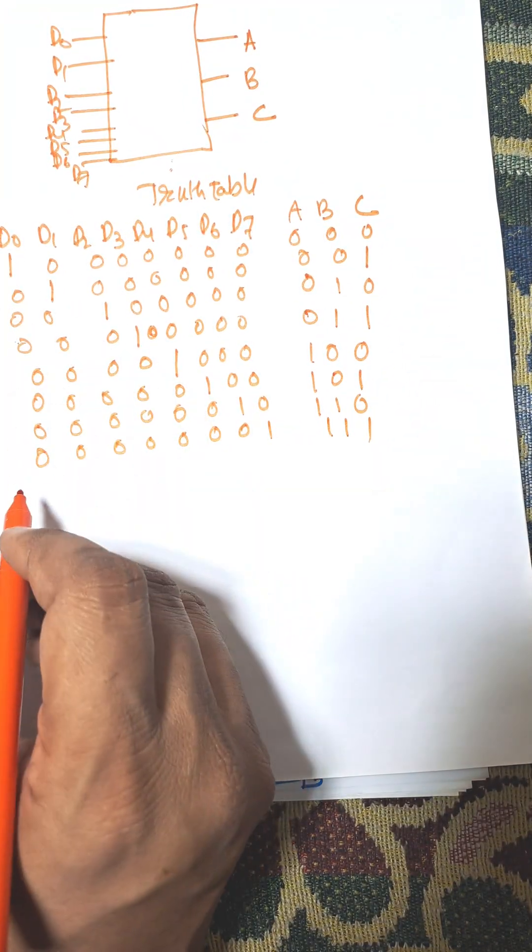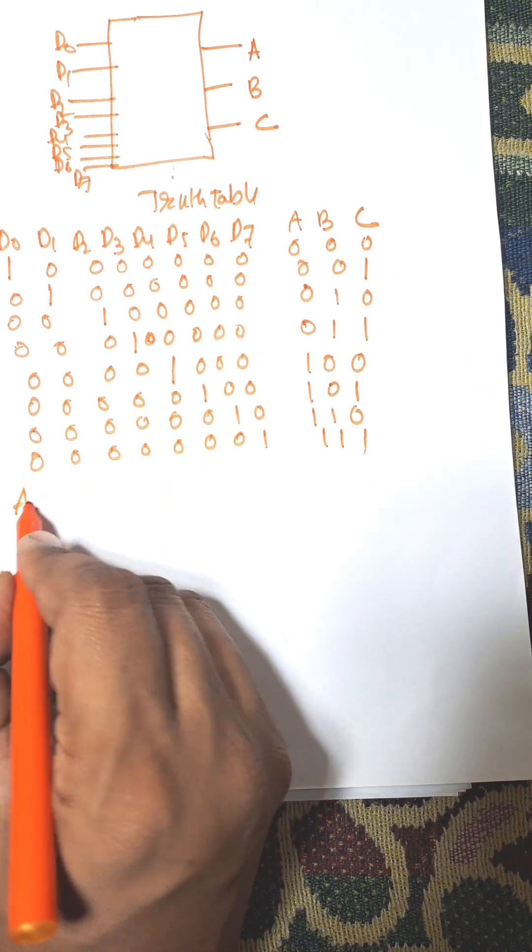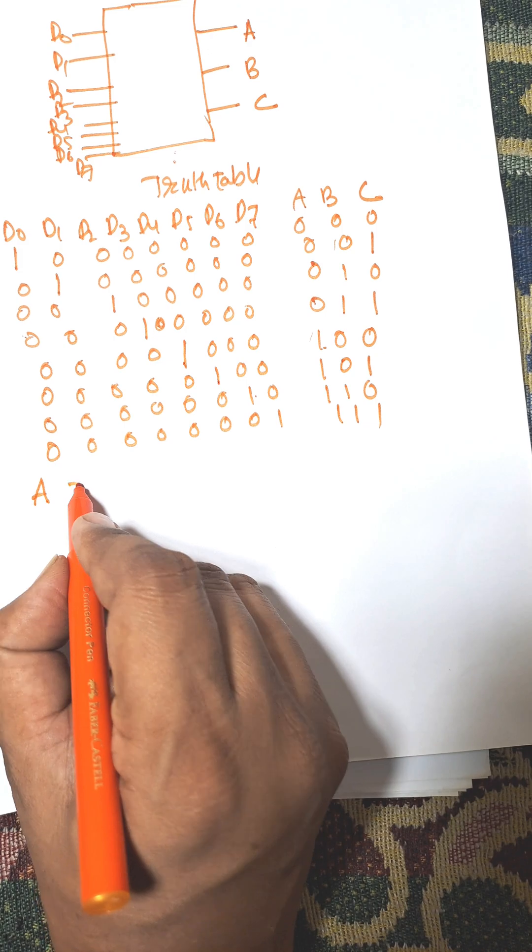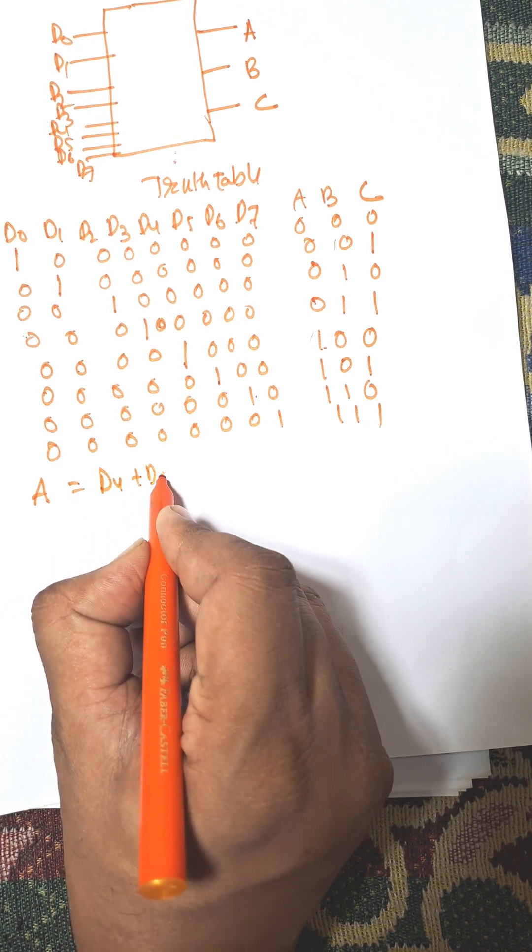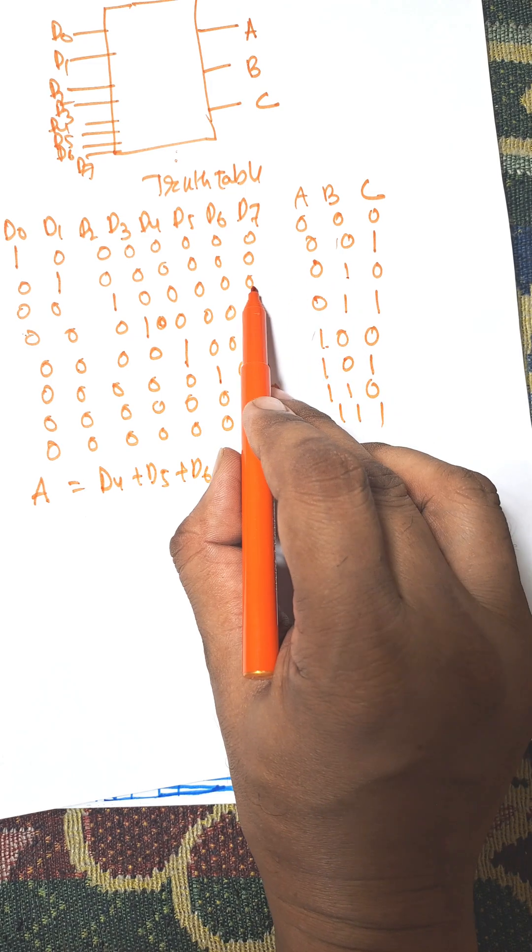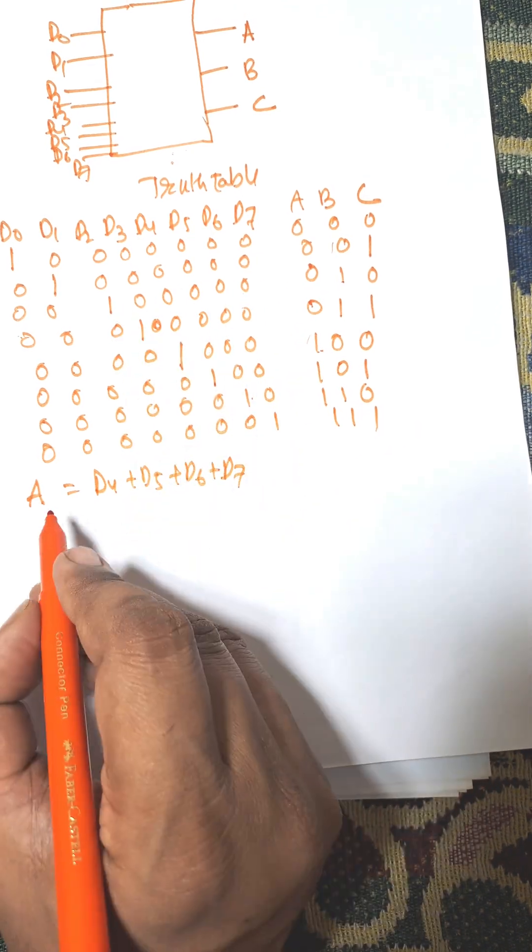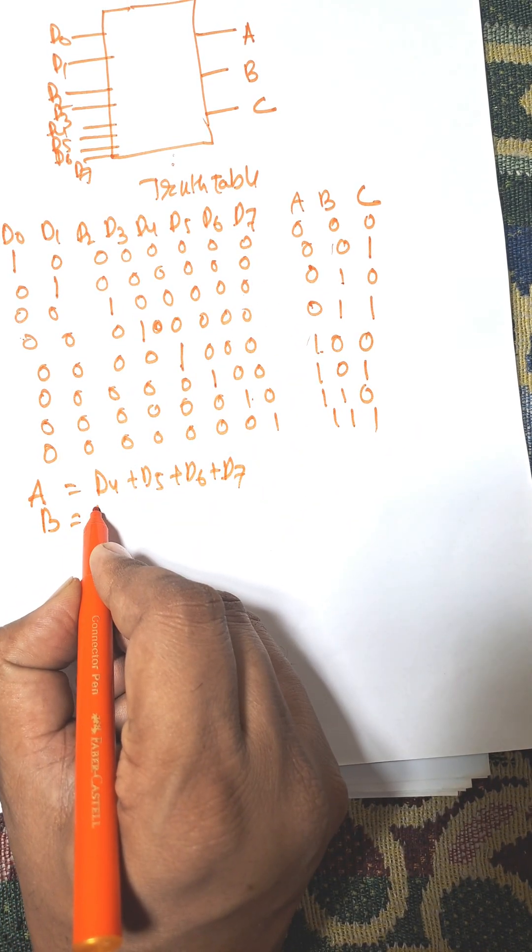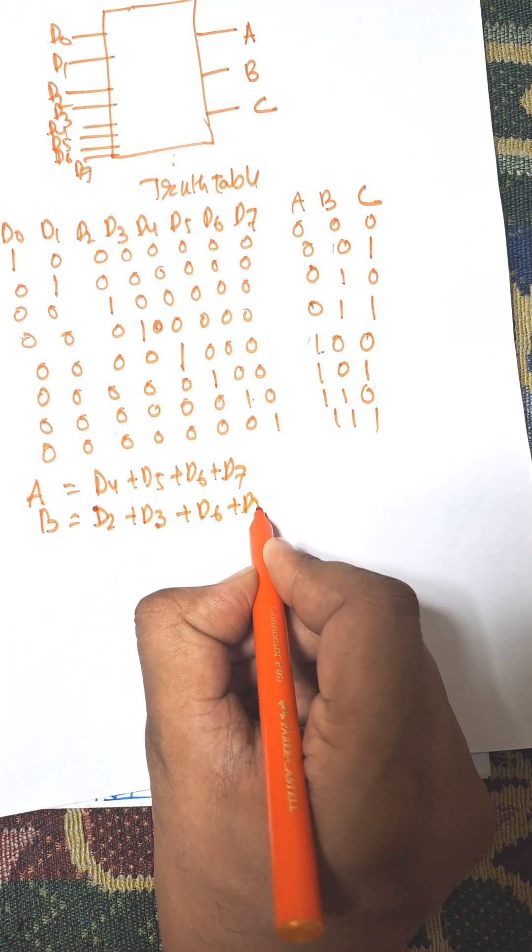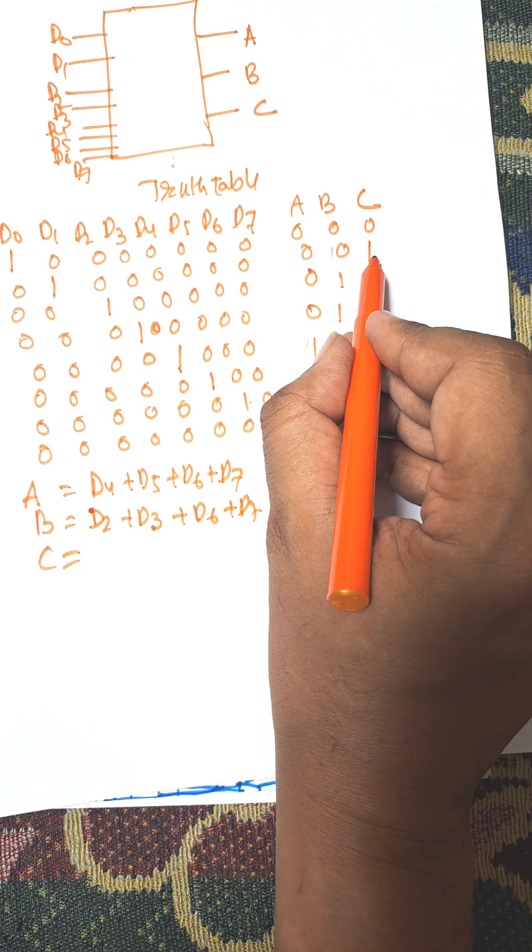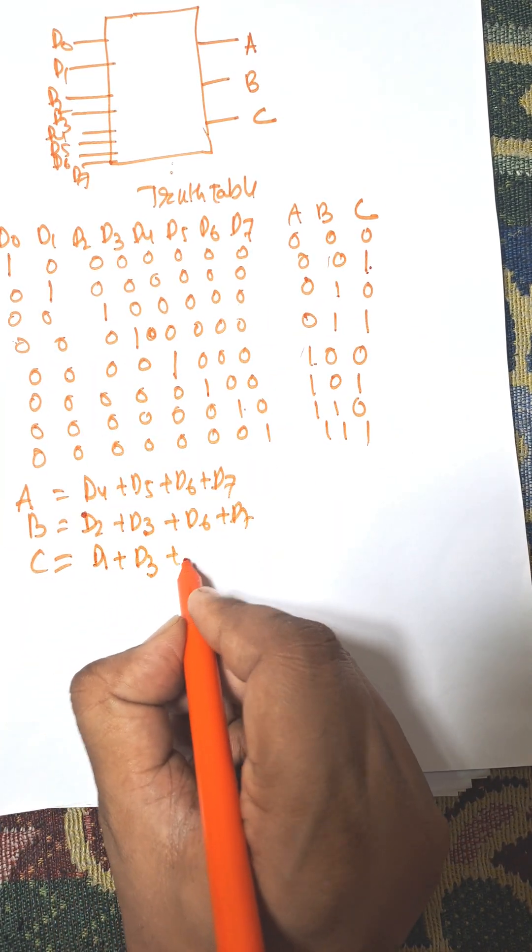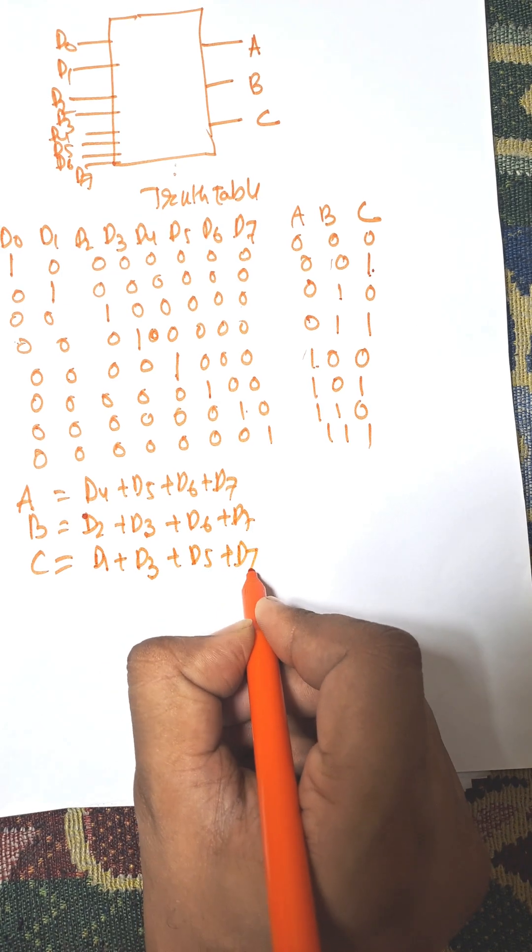Now for output a, we have d4, d5, d6, and d7, so A equals d4 plus d5 plus d6 plus d7. And b is for d2 plus d3 plus d6 plus d7. And for c, this is d1 plus d3 plus d5 plus d7. So these are the Boolean expressions.